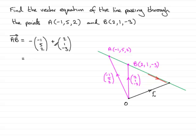Anyway, we'll work this out, and what have we got? Well, this is going to be 1 and 2 making 3, minus 5 and 1 is minus 4, and minus 2 and minus 3 is minus 5. So the vector A to B then is 3, minus 4, minus 5.